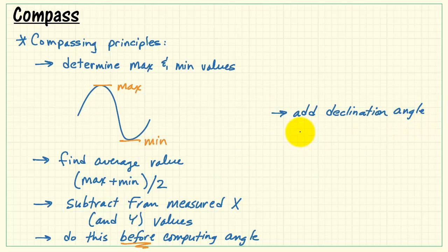For a full correction, then, you'd want to add the declination angle. If we have degrees east, that tells us we add the value. Degrees west means you would add a negative angle. So west means negative.